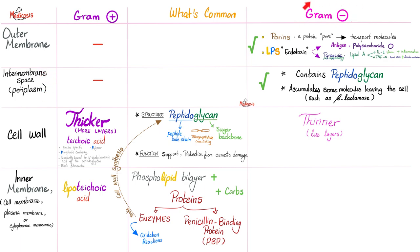The inter-membrane space, which is peculiar to gram-negative bacteria, contains peptidoglycan — the same peptidoglycan that sits between the outer and inner membranes. Moreover, as molecules try to leave the gram-negative bacterial cell, some leave debris behind — for example, beta-lactamase — which is super important in the story of antibiotic resistance.